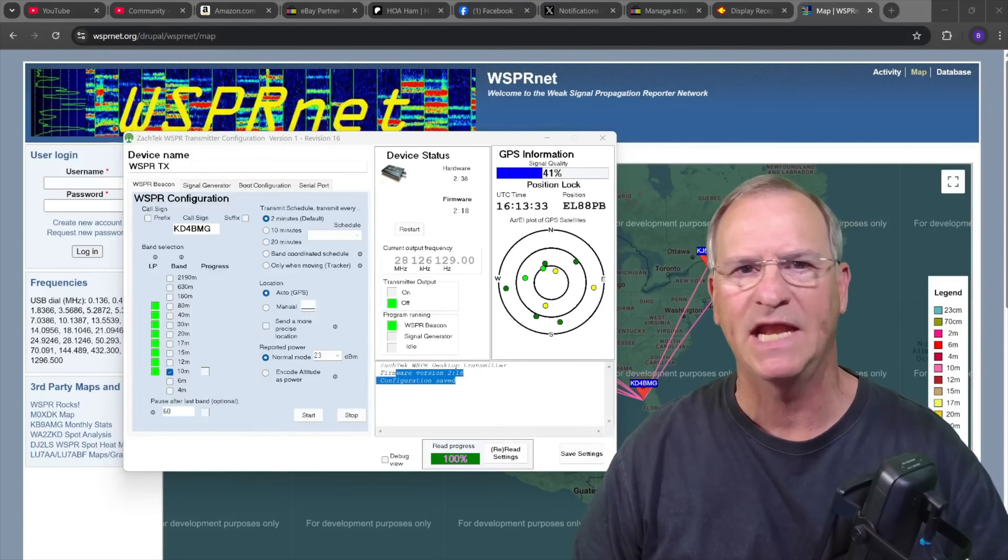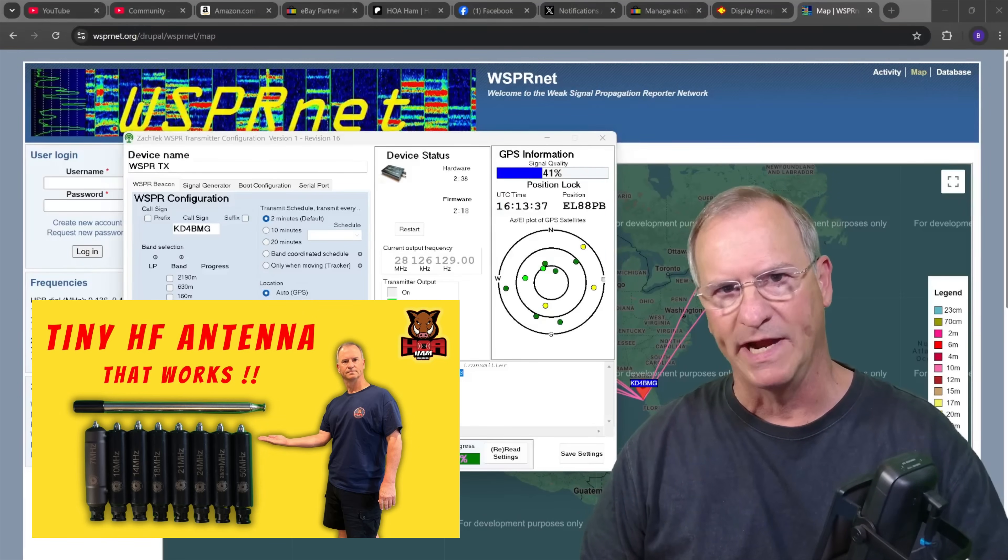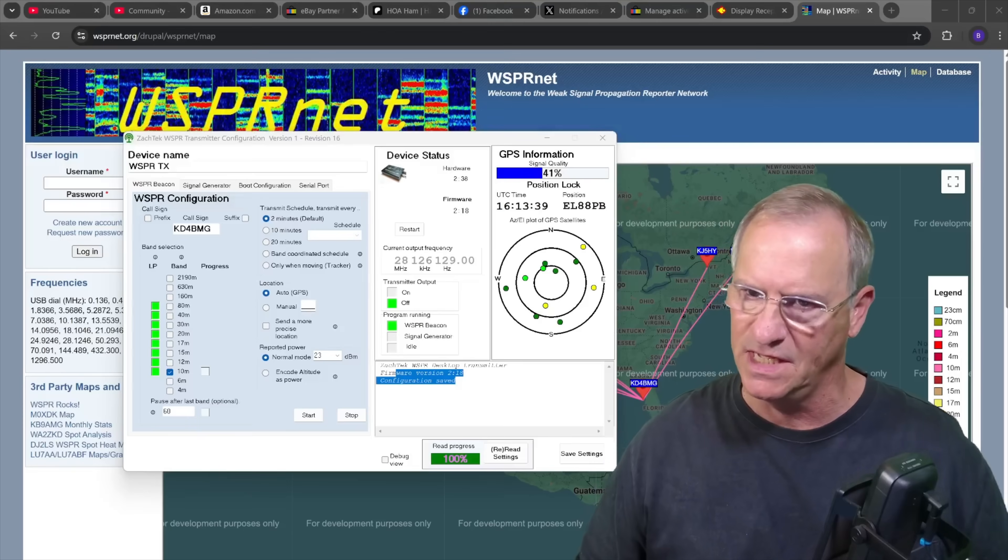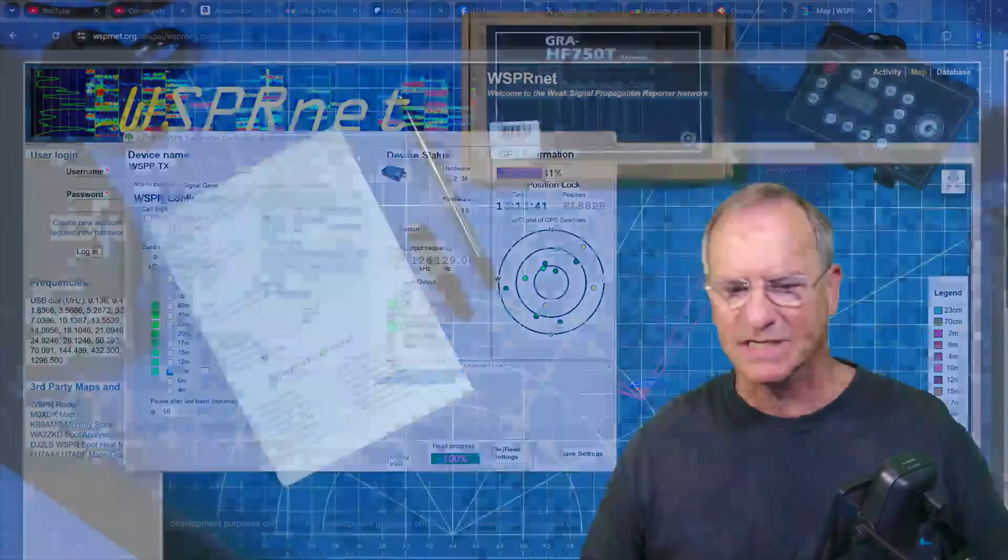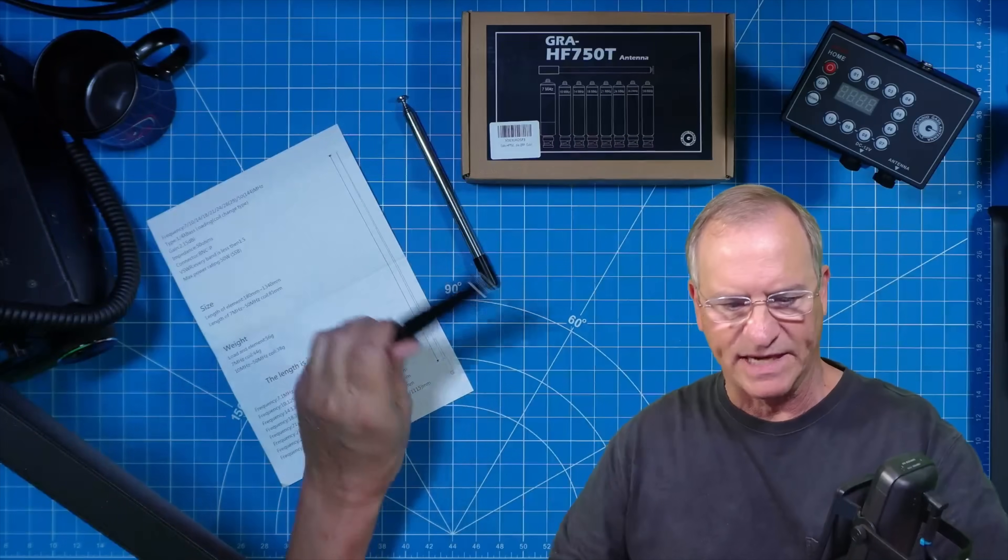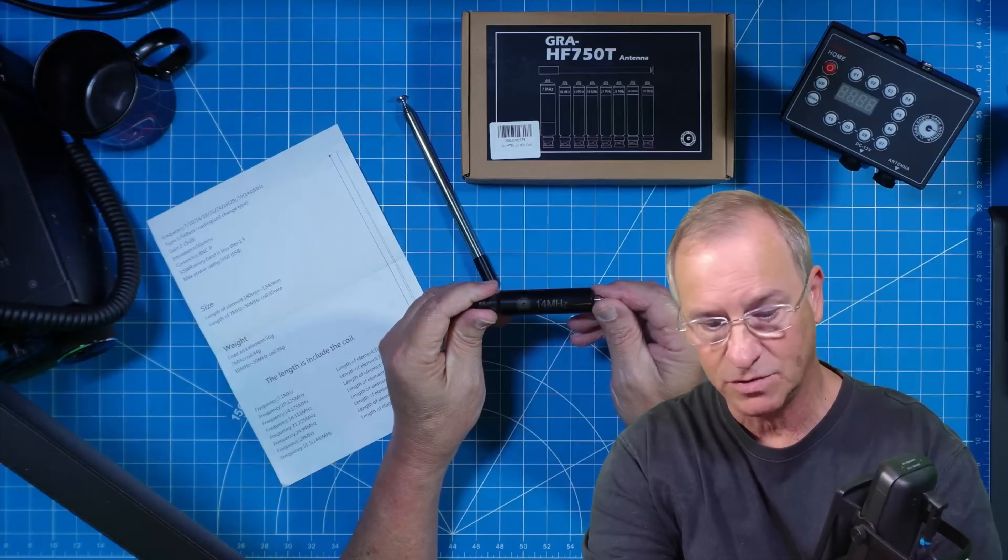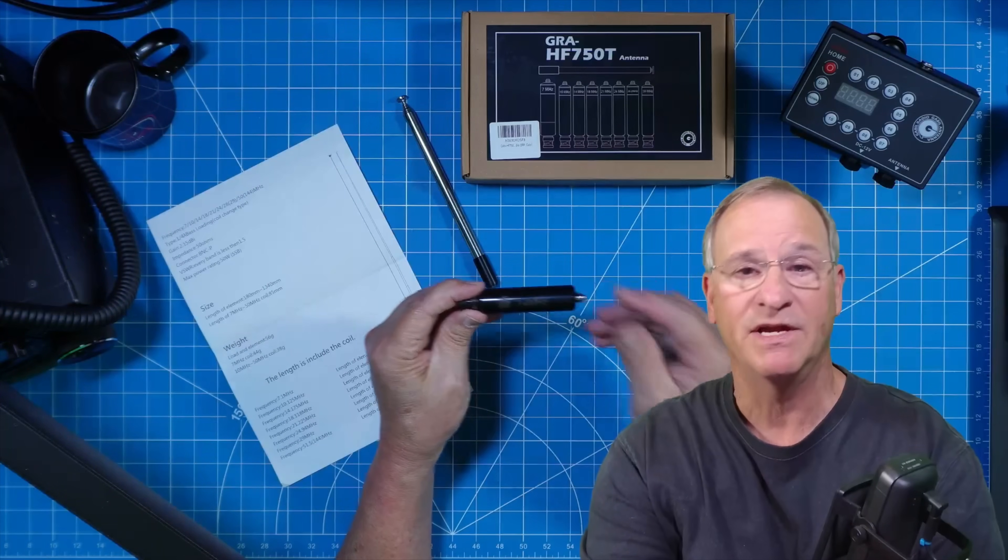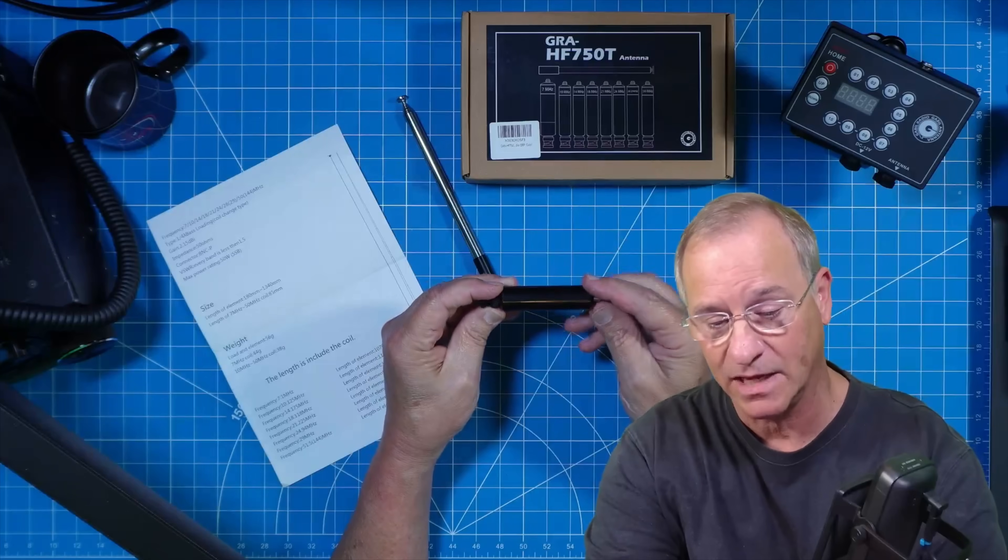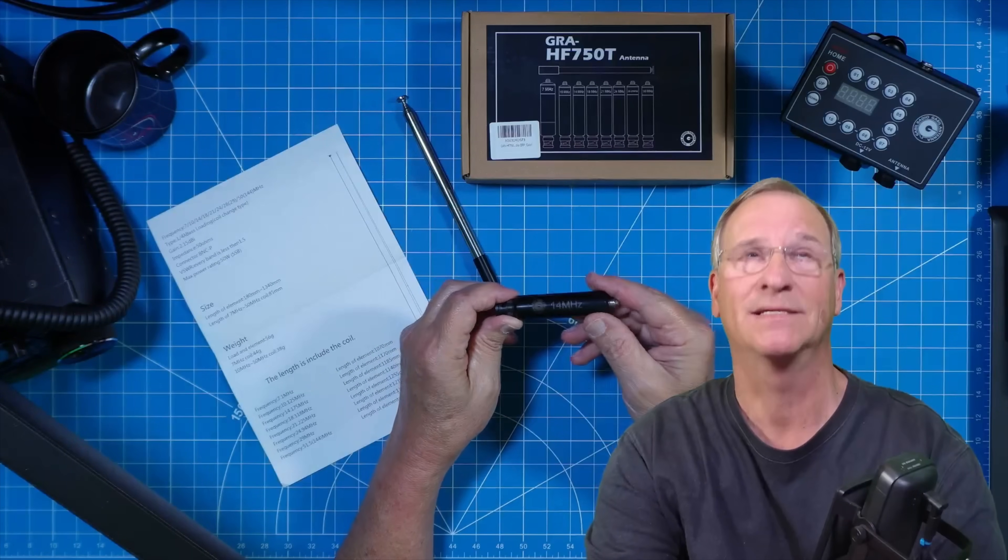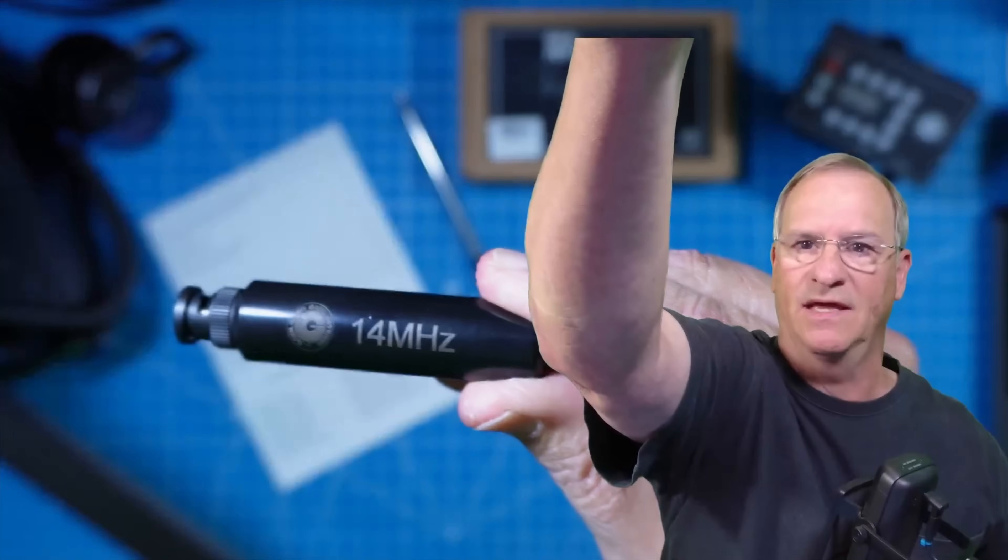How's it going everyone? Bob here, KD4BMG HAM. Last week we talked about the Gable Radio HF750T. It's a set of really tiny coils intended for operation POTA, SOTA, very minimalistic pack, something that is lightweight and tiny as far as the amount of cube that it takes up.